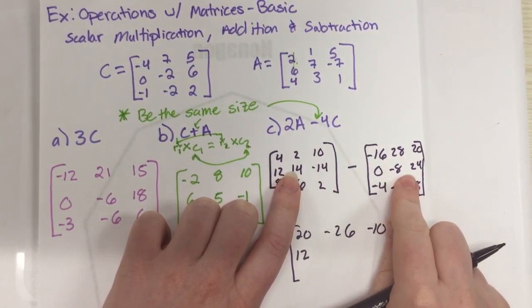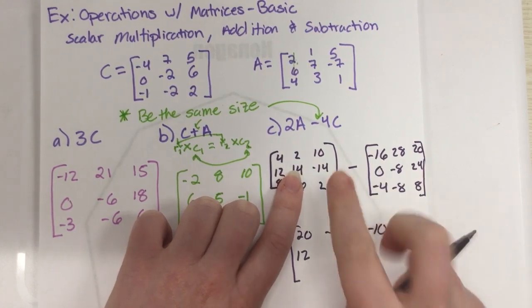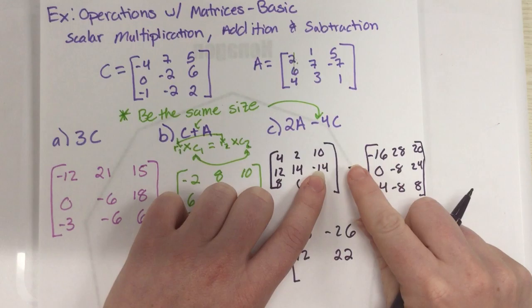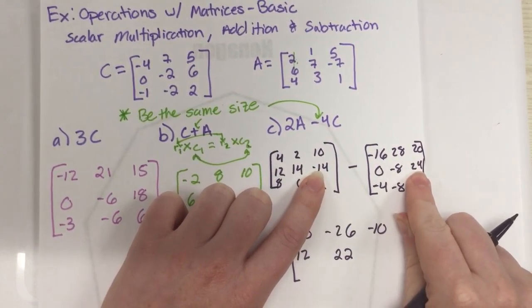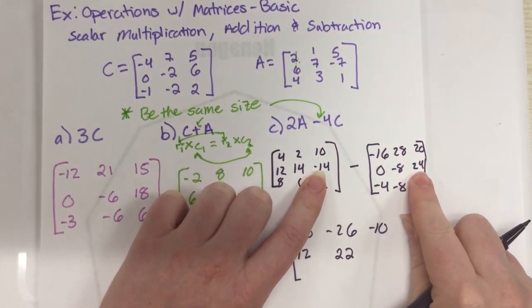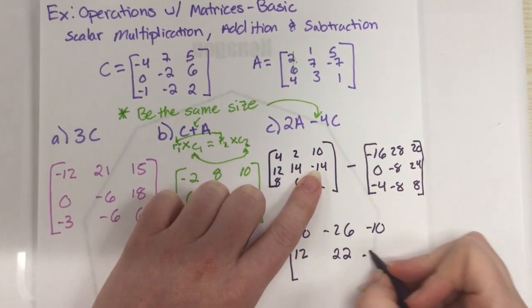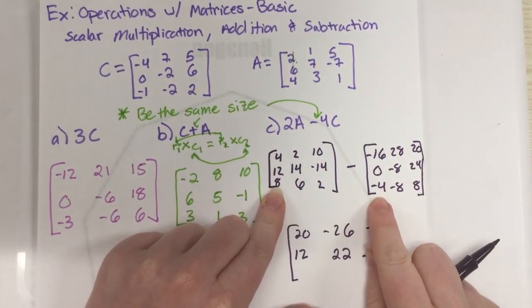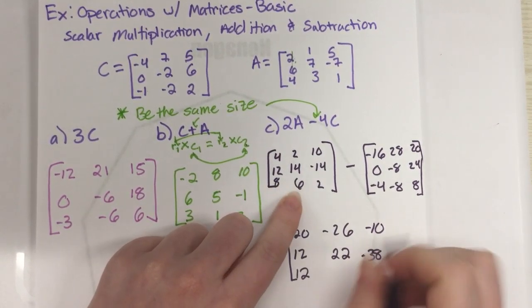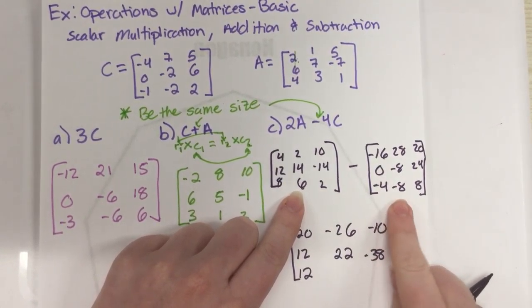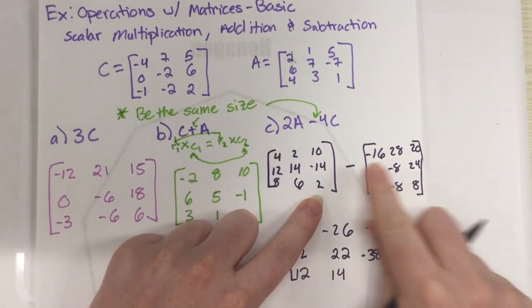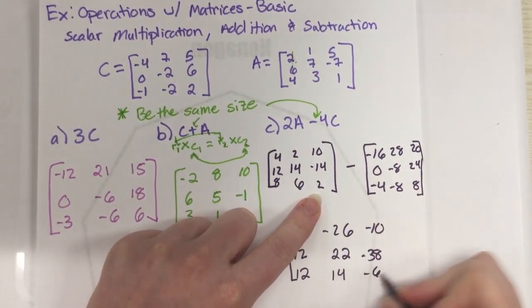14 minus a negative 8. Well, that's actually plus 14 plus 8, which would come out to be 22. Negative 14 minus 24. So it's going to be negative, but you're really adding that. And so that would be a negative 38. 8 minus a negative 4 is really 8 plus 4. So that's 12. 6 minus a negative 8. So that's really 6 plus 8, which would be 14. And 2 minus 8 would be a negative 6.